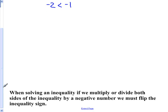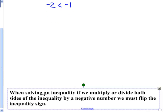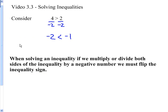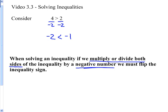So basically when solving an inequality, we're going to solve it the same way that we do an equation. But here's the big exception: if we multiply or divide both sides by a negative number when solving, that's when we must flip the sign of the inequality. Let me stress again — that's when we multiply or divide both sides by a negative number. That's when we flip the inequality sign.